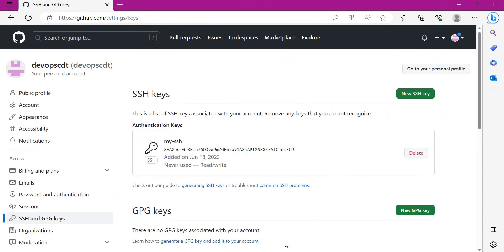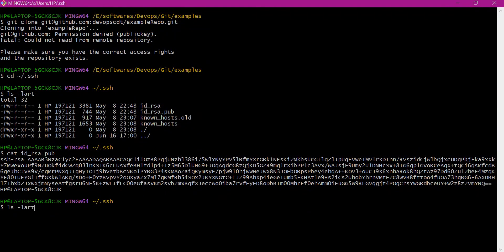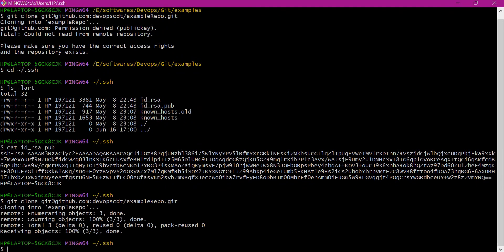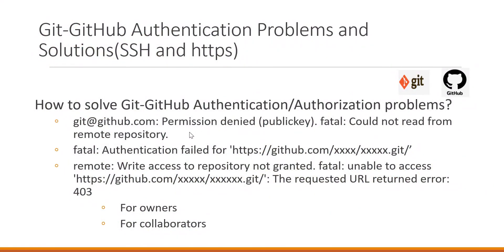Now let us verify the clone again. This time we are able to clone the remote repository successfully. This problem occurred because there was no SSH public key corresponding to the SSH private key present in the git client machine. We solved this issue by adding the public key to the GitHub server.